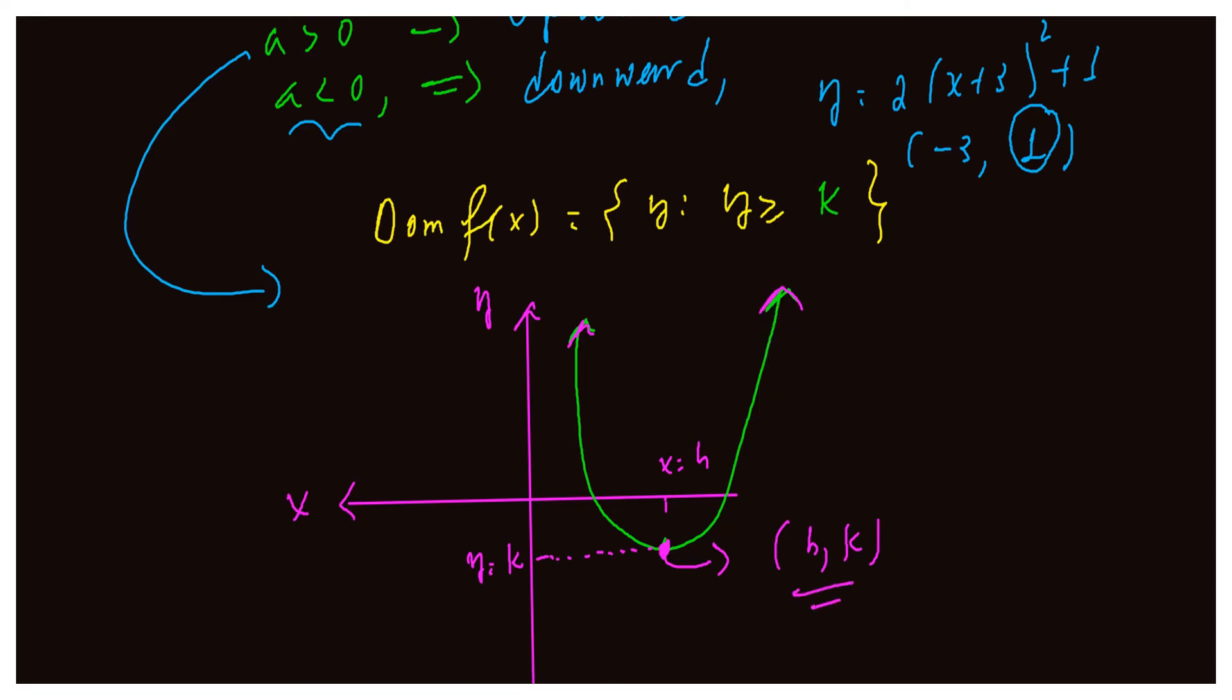h, k is the turning point and every y is greater or equal to k. The range of our function will be always an element of real numbers so that y is greater or equal to k.